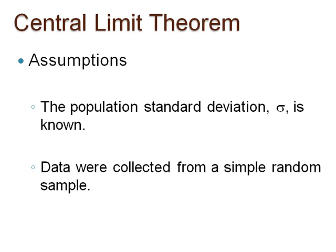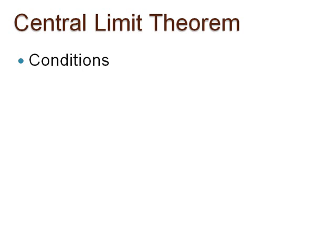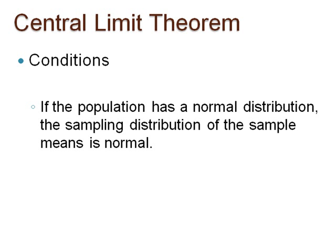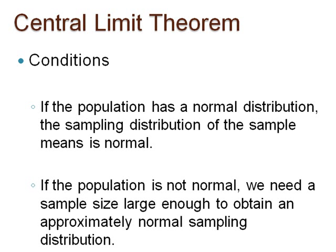The conditions necessary involve the shape of the population distribution. If the population distribution is normal, the sampling distribution can be treated as normal no matter what the sample size n is. If the population is not normal, we need a sample size large enough to obtain an approximately normal sampling distribution.